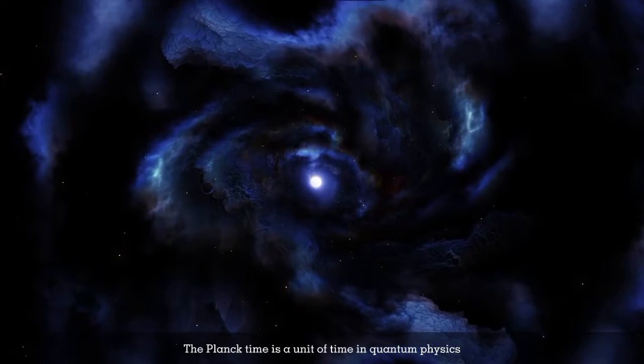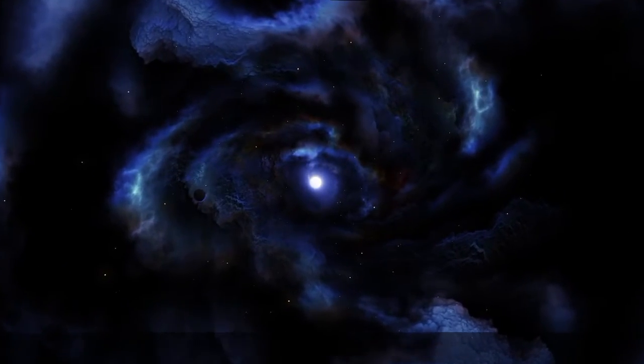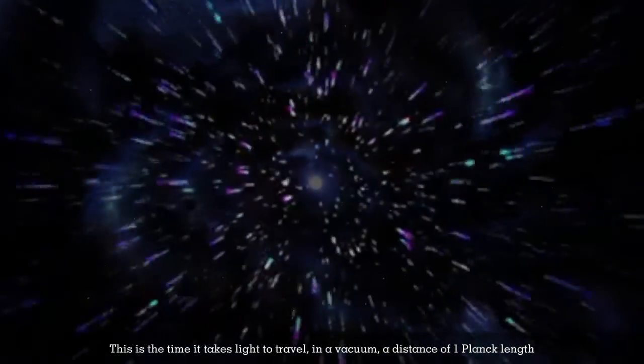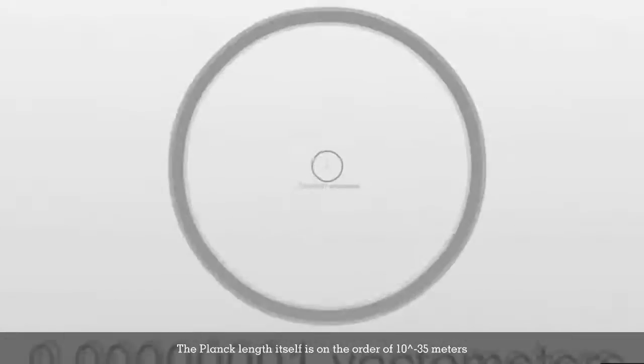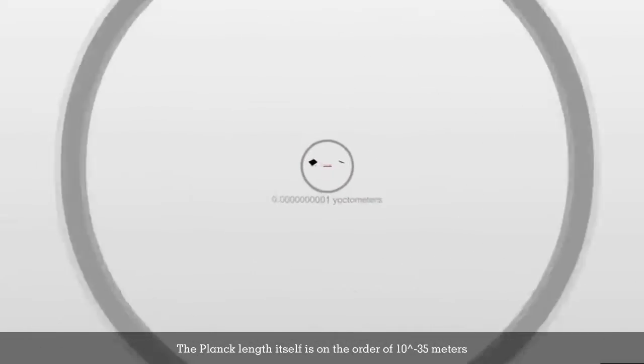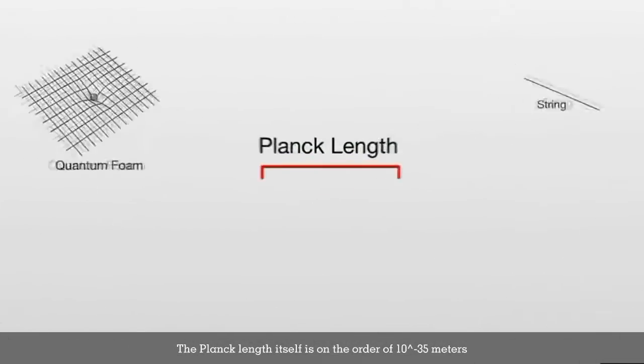The Planck time is a unit of time in quantum physics. This is the time it takes light to travel in a vacuum, a distance of one Planck length. The Planck length itself is on the order of 10 to the power of minus 44 meters.